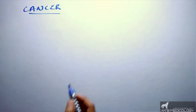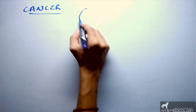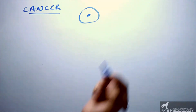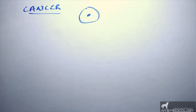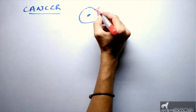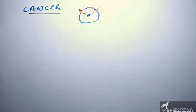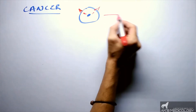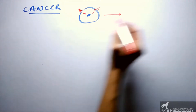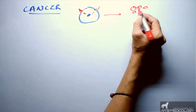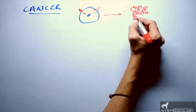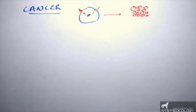Cancer is nothing but rapid division or proliferation of cells, better defined as uncontrolled, abnormal, and not required proliferation of cells. Here, one cell continuously divides and forms many cells which may or may not be similar to the parent cell. This is called cancer or neoplasm, and the process is called neoplasia.